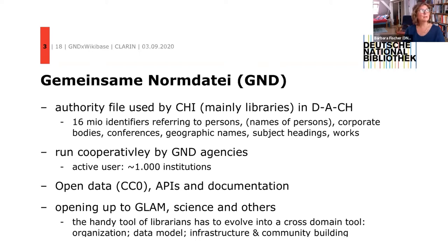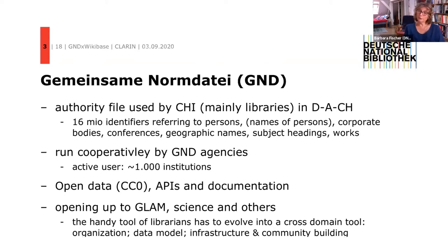To make the GND more accessible, we will have to transform our governance structure, which is currently very library-focused, so that it works for museums and archives too. We also need to alter our data model slightly — our research project found it is already quite suitable for other GLAM institutions but still needs minor changes. We certainly have to change our infrastructure, as the software currently used to edit the GND is not very accessible and the interface usability is not smooth enough for a broader audience.